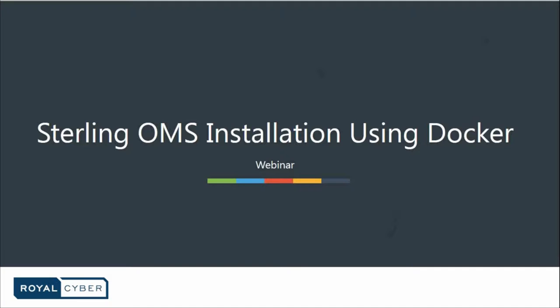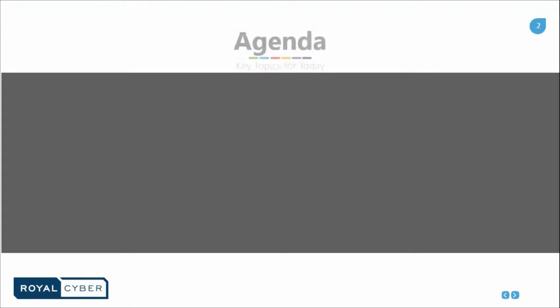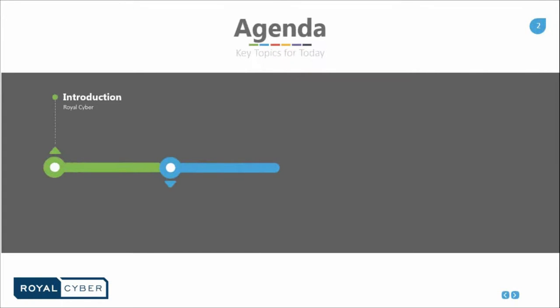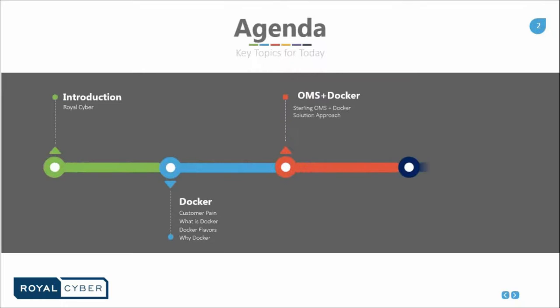I want to talk about Docker — an open source project that automates the deployment of software applications inside containers by providing an additional layer of abstraction and automation of OS-level virtualization on Linux. For today's agenda, we'll talk about the Sterling OMS. We're going to have a brief introduction about RoyalCyber, then move on to the Docker part of the webinar, covering customer pain points, what Docker is, Docker's flavors, and why you need Docker in Sterling OMS.